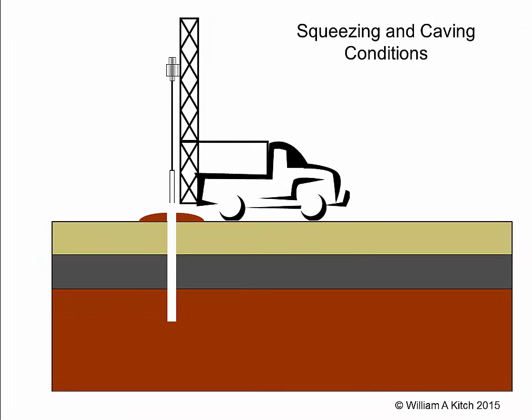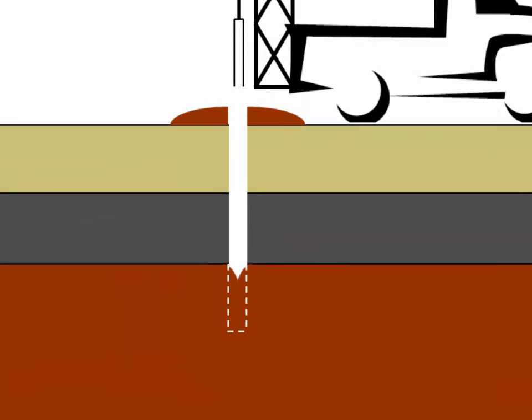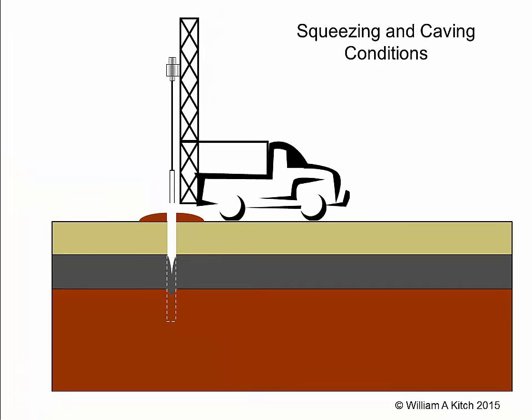The open hole method only works if the soil is stiff enough and strong enough to remain open after the augers are removed. Many times the soil is not able to maintain an open hole for sampling. If the soil is soft, it may squeeze into the boring when the augers are removed — this often happens in a soft clay layer. If the soil is a clean sand with little or no cohesion, the soil at the sides of the hole may cave or fall into the boring, particularly when drilling in sands below the water table. When squeezing or caving conditions occur, we must use a different drilling method that will support the borehole during the sampling process.